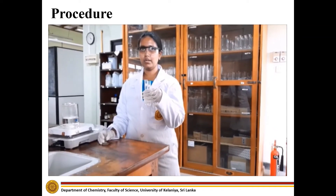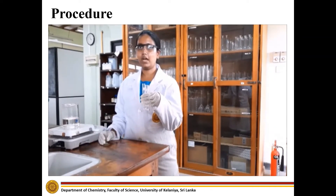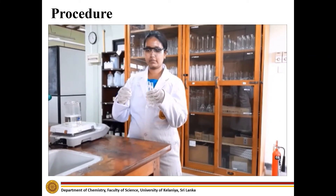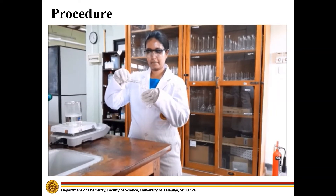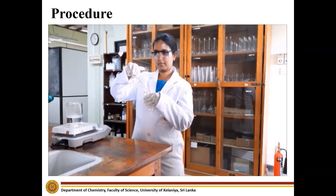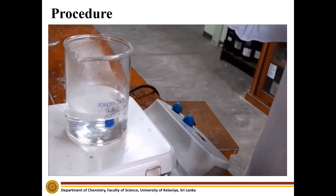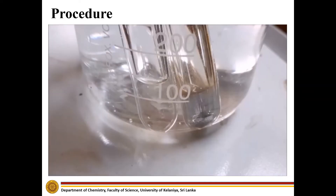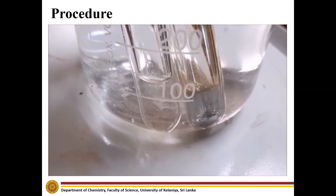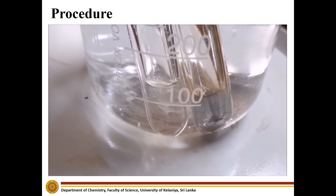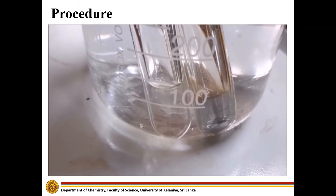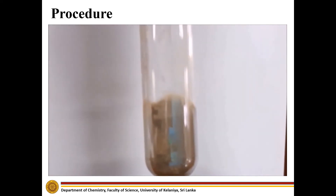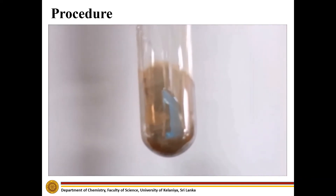Add freshly prepared Tollens' reagent into acetaldehyde and acetone and boil them for not more than 5 minutes. Here you can see a silver mirror is developing in the test tube that contains acetaldehyde, but you cannot see a silver mirror in the test tube that contained acetone. Here you can clearly see a silver mirror deposited on the wall of the test tube.